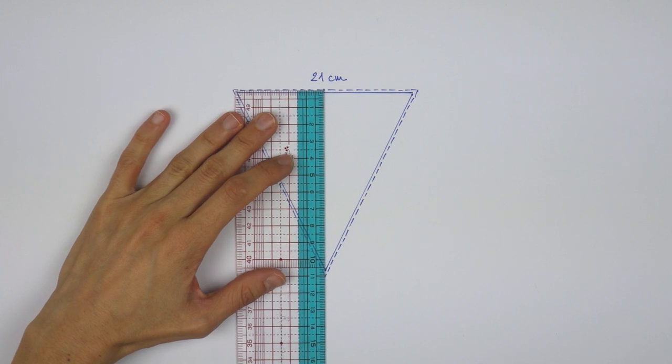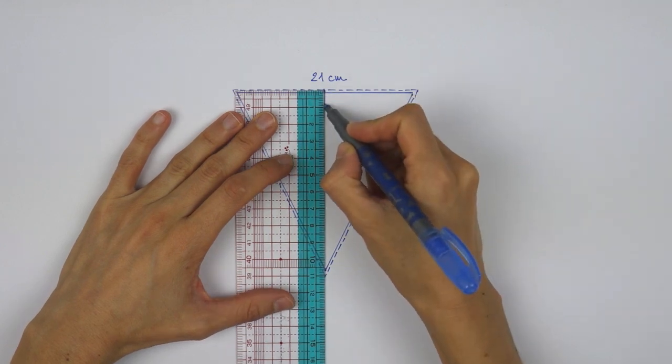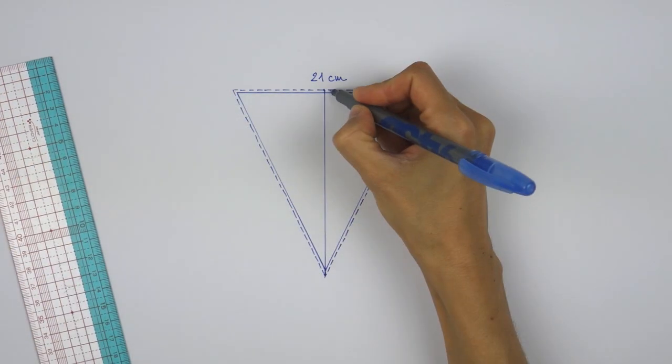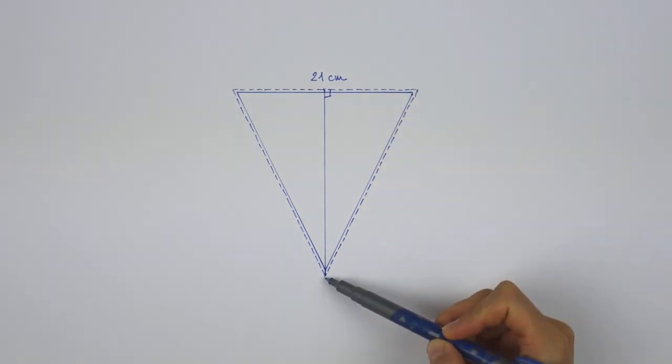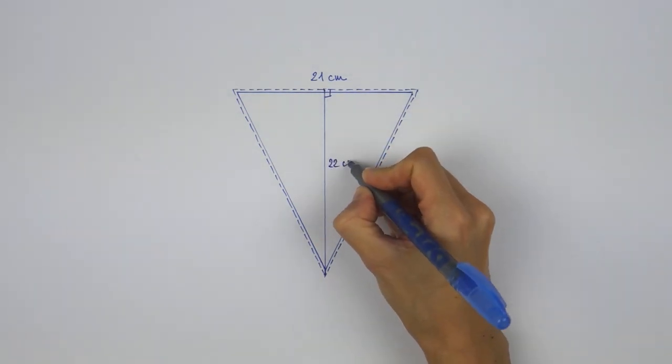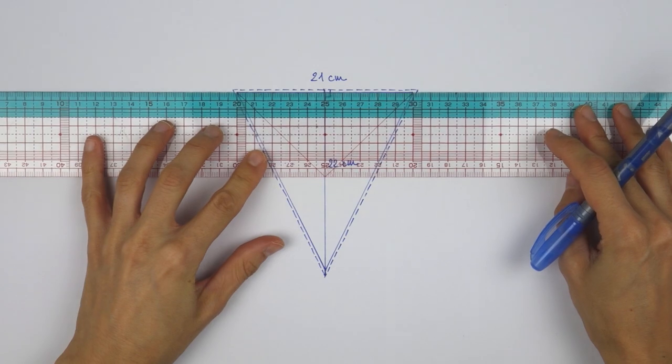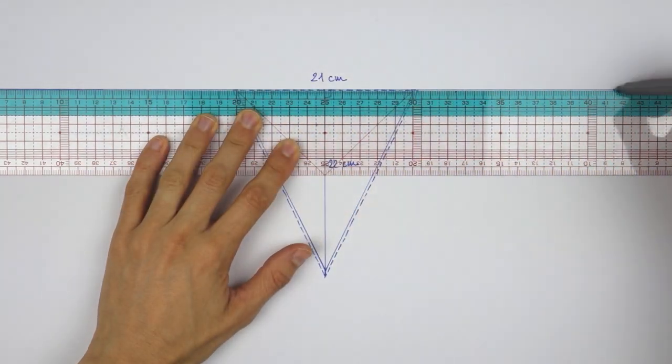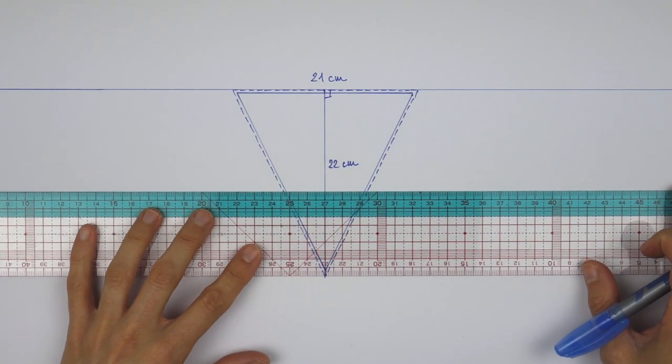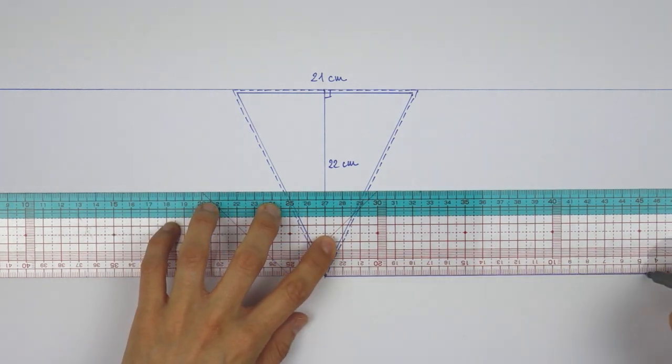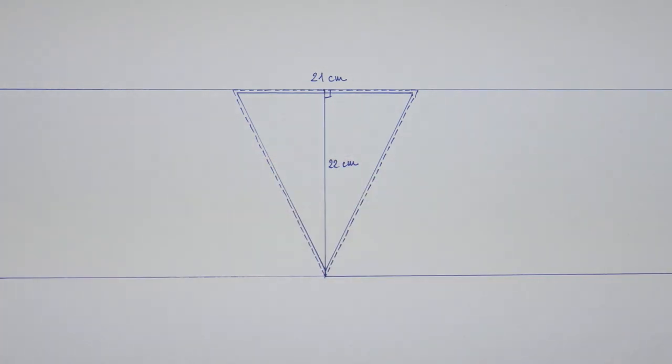In the middle, I trace a perpendicular line to measure the new length, seam allowance included. In my case, 22 cm. Now to easily cut our triangles in the fabric, we'll start by cutting long stripes of fabric, whose width equal the length of our triangle, seam allowance included, of course.